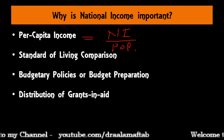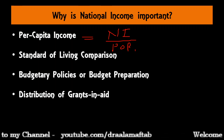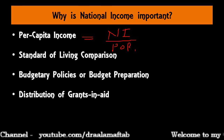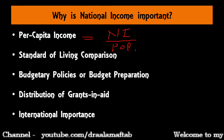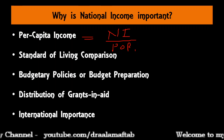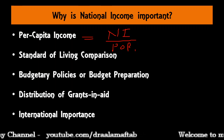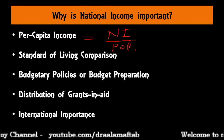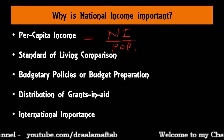The next point is distribution of grants in aid. National income estimates help in the fair distribution of grants in aid by federal governments to state governments and other constituent units. The next point is international importance. National income studies are also important in international spheres, as these estimates not only help fix the burden of international payments equitably among nations, but also enable us to determine the subscriptions and quotas of different countries to international organizations like the World Bank, IMF, and UNO. Moreover, national income data is used to compare national economic growth and accordingly ranking is done.